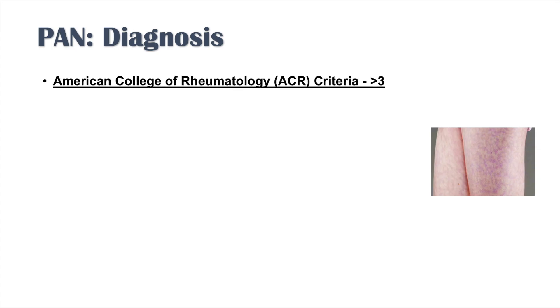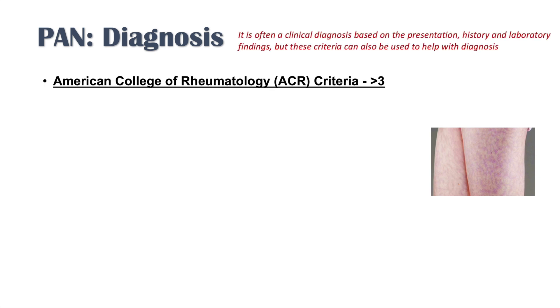How do we make the diagnosis of PAN? There isn't a single specific criteria, but the American College of Rheumatology, or ACR, has particular criteria. If you meet three or greater of these criteria, you can essentially make a polyarteritis nodosa diagnosis.